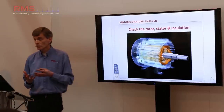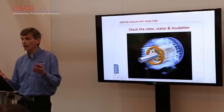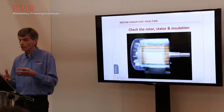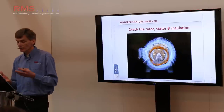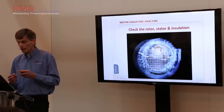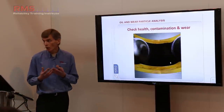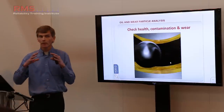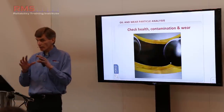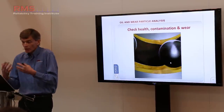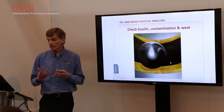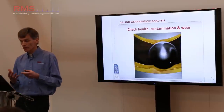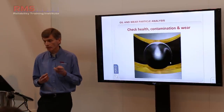With our vibration systems, we can use motor current signature and motor circuit analysis to understand the condition of the rotor, the stator, and the actual insulation inside the machine. Equally, with oil analysis and oil wear particle analysis, we can measure the health of the oil, know the oil condition, know whether we've got machine wear developing from inside elements that are breaking down, and whether we've got external contaminants getting into the oil — because it's a very critical path that lubrication is kept clean.